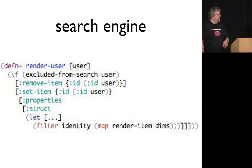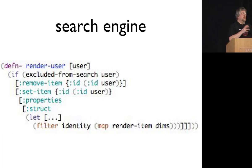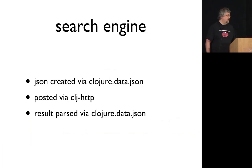Render-user has a lot of logic behind the scenes. The overall structure says: if the user is excluded from search, send a remove packet; otherwise send a set-item packet with all the properties, and inside that we do map render-item across the dimensions. We were finding we could write lots of small composable functions that were easy to understand, which hadn't been as easy in a lot of other languages. And it performed well. The query, again, is nice simple stuff based around clj-http.